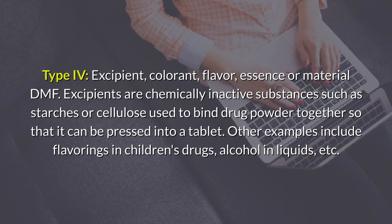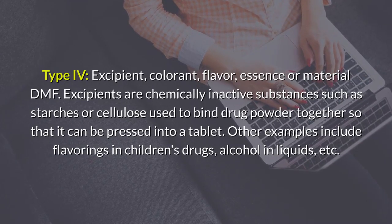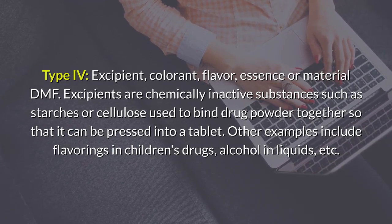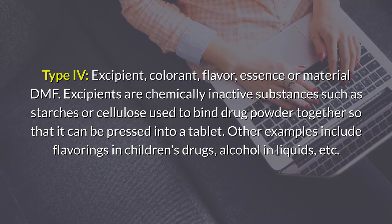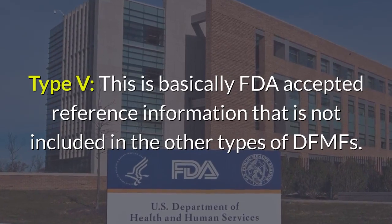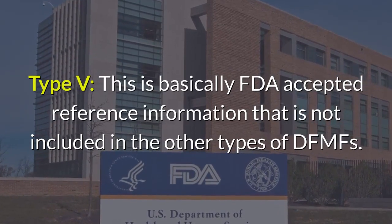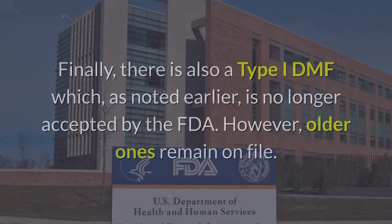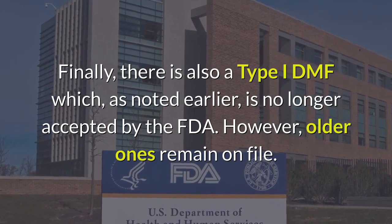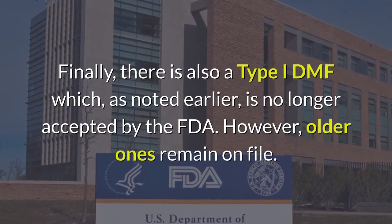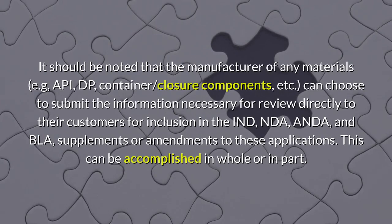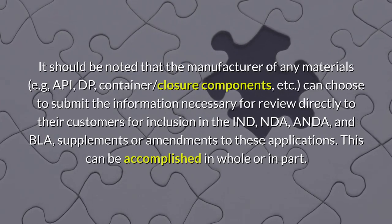Type 4 covers excipients, colorants, flavors, essences, or similar materials. Excipients are chemically inactive substances such as starches or cellulose used to bind drug powder together so that it can be pressed into a tablet; other examples include flavorings in children's drugs and alcohol in liquids. Type 5 is essentially FDA-accepted reference information not included in the other DMF types. Type 1 DMF, as noted earlier, is no longer accepted by the FDA, though older ones remain on file.